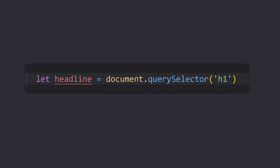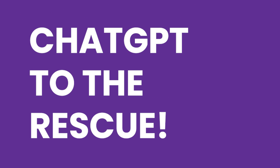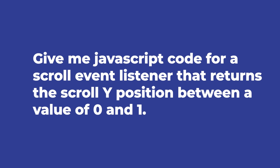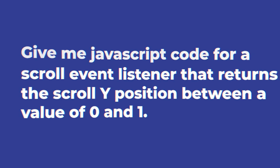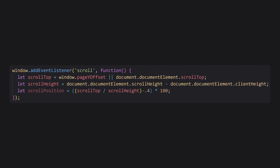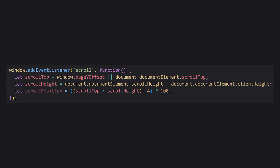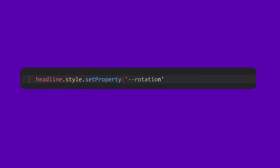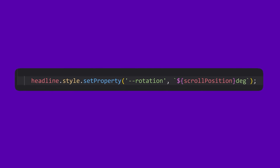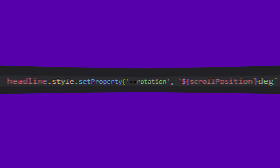First we fetch our headline, then we listen to a scroll event. Being a lazy cheater, I asked ChatGPT to generate the code with the following prompt: 'Give me JavaScript code for a scroll event listener that returns the scroll Y position between a value of zero and one.' This is the code it generated — feel free to pause to examine it. I made a slight adjustment to the math at the end, which affects the degree to which Fred will rotate. Finally, just before the function closes, we add a line of code that sets a custom property value tied to the scroll value.